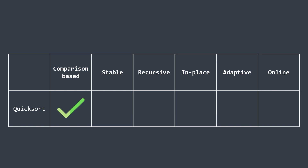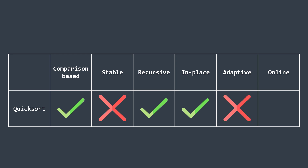Regarding properties: quicksort sorts elements by comparing them, so it is comparison-based. Quicksort is not stable, because swapping non-adjacent elements can change the relative order of elements with equal keys. It is recursive, as we saw throughout the process. Even though the space complexity is O(log n) and not O(1), it is still considered in-place since O(log n) is acceptable. Quicksort does not take advantage of pre-sortedness, so it is not adaptive. It is also not online — we need all elements available from the beginning.